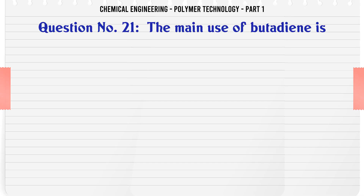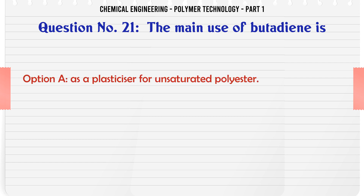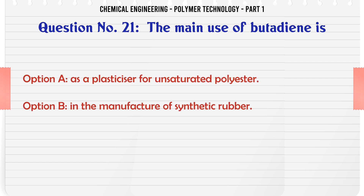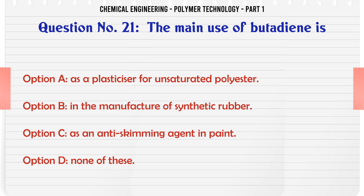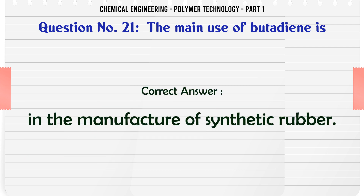The main use of butadiene is: A. As a plasticizer for unsaturated polyester, B. In the manufacture of synthetic rubber, C. As an anti-skinning agent in paint, D. None of these. The correct answer is in the manufacture of synthetic rubber.